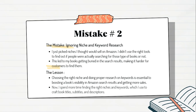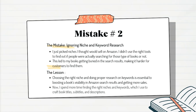I was creating books without doing niche research and keyword research, which is why my books weren't getting any sales. Choosing the right niche and doing proper research on keywords is essential to boosting a book's visibility in Amazon search results and getting more sales. Now I spend more time finding the right niches and keywords, which I use in book titles, subtitles, and descriptions.